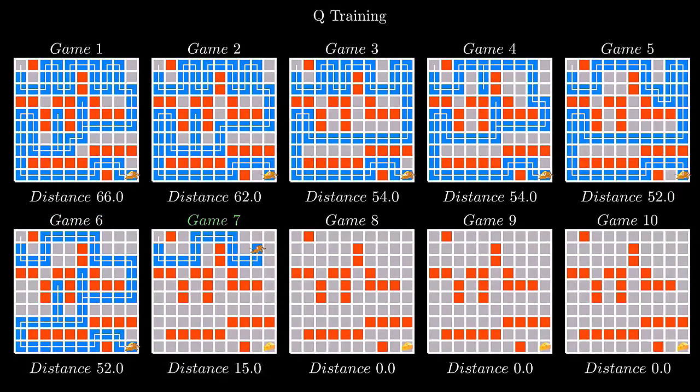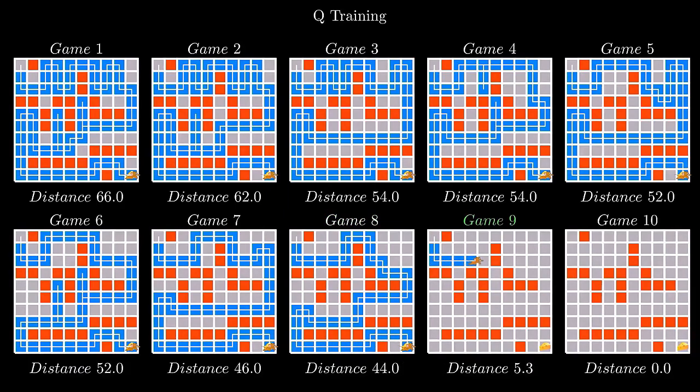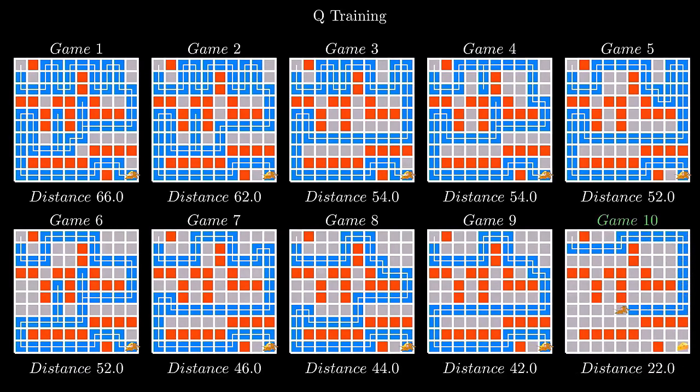This randomness ensures that our mouse doesn't get stuck in a rut and remains open to discovering potentially better paths. The balance between these two is determined by our exploration factor, epsilon, typically set at 0.1. This means that one in every 10 moves, our mouse might take a walk on the wild side exploring uncharted territories. This delicate balance ensures our mouse becomes proficient yet remains curious, always inching towards the optimal path to the cheese.